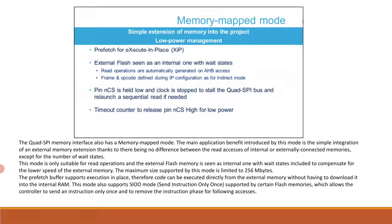The Quad SPI memory interface also has a memory mapped mode. The main benefit is simple integration of an external memory extension, with no difference between read access of internal or externally connected memories except for the number of wait states. This mode is only suitable for read operations; the external flash memory is seen as internal with wait states to compensate for lower speed. The maximum size supported is 256 megabytes. The prefetch buffer supports execution in place, so code can be executed directly from external memory without downloading it into internal RAM. This mode also supports SIOO (Send Instruction Only Once) mode, which allows the controller to send an instruction only once and remove the instruction phase for following accesses.